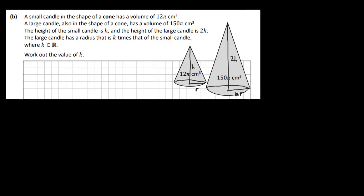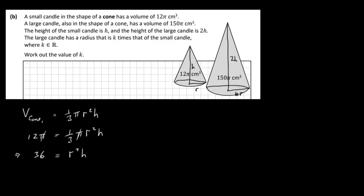Let's work out the volume of cone 1. The volume of a cone is ⅓πr²h. So ⅓ × π × r² × h = 12π. The π's cancel, and multiplying across by 3 gives r²h = 36.